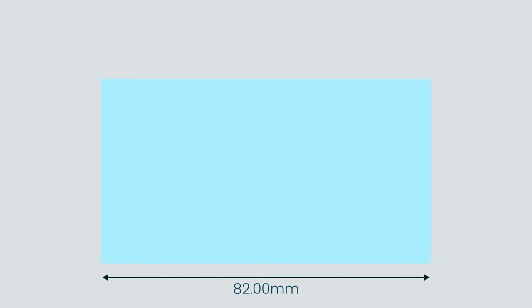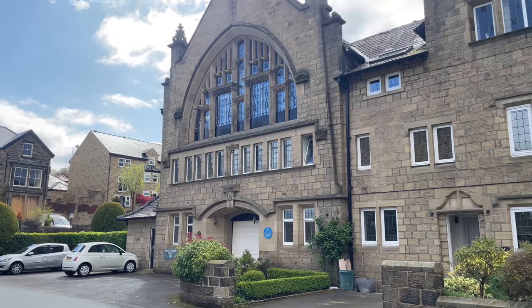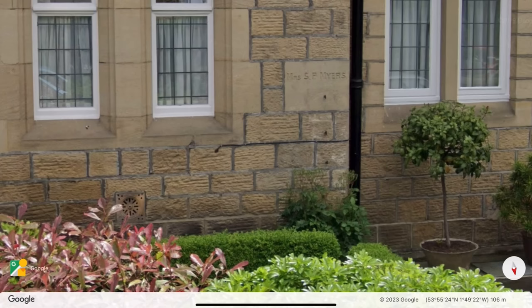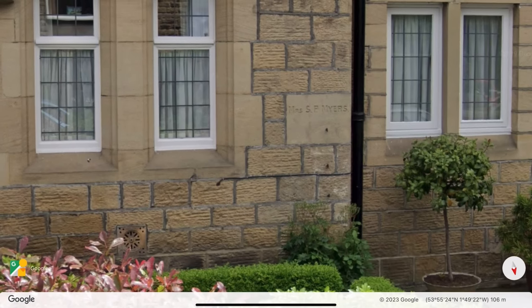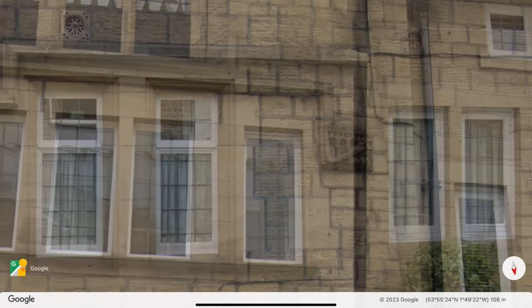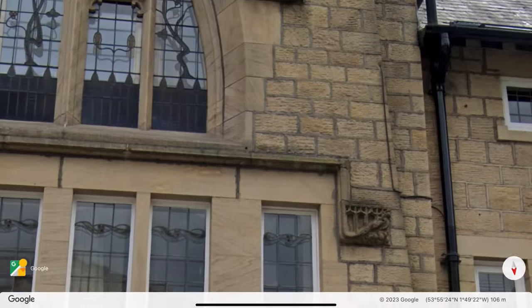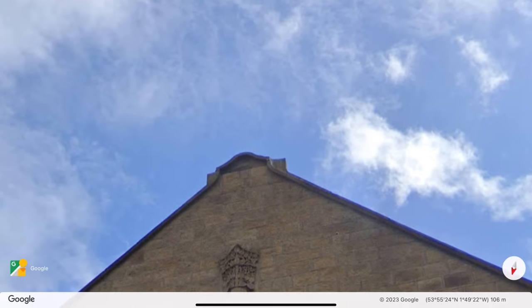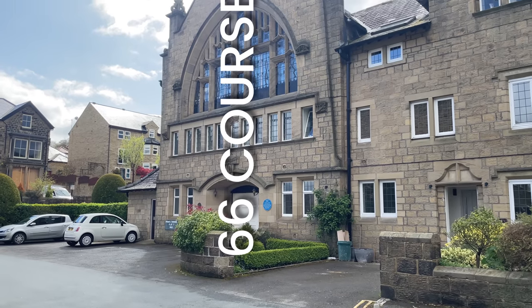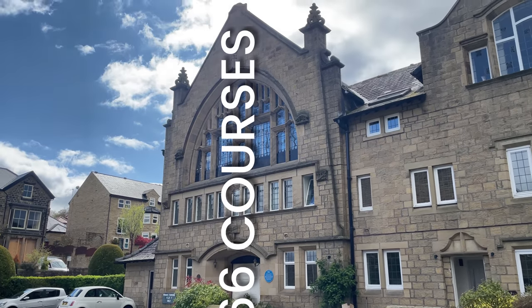We're going to need to work out how tall the building is. To do that, we need to know how many courses of stone make up the frontage. Using Google Street View, I simply counted them from the bottom to the top. The building is 66 courses of stone tall.